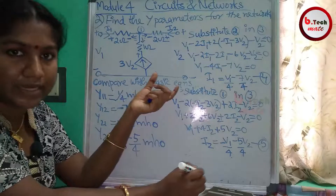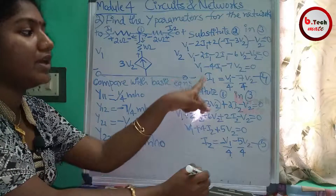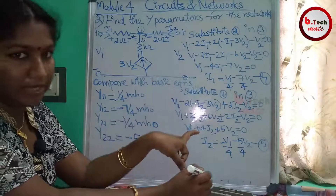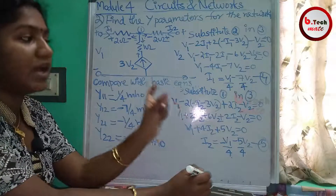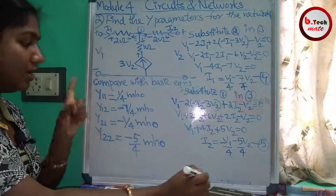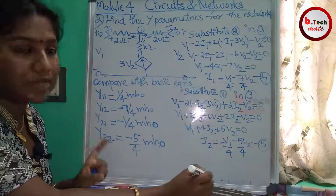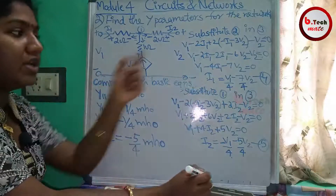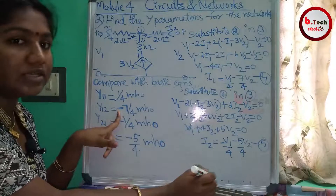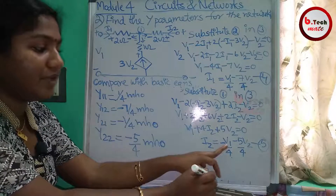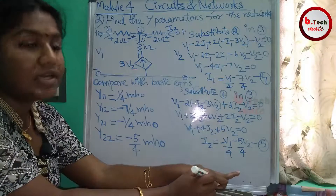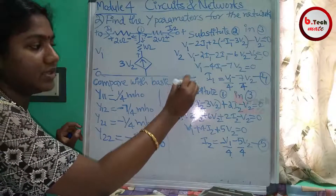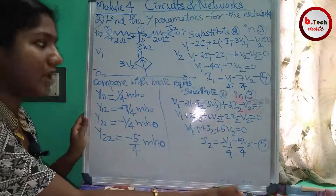If you have a circuit with a dependent source, the y-parameters are derived by expressing I1 and I2 in terms of V1 and V2. We compare the coefficients of V1 and V2 in each current equation to the standard y-parameter form to identify y11, y12, y21, and y22. This completes the analysis of y-parameters for this type of problem.